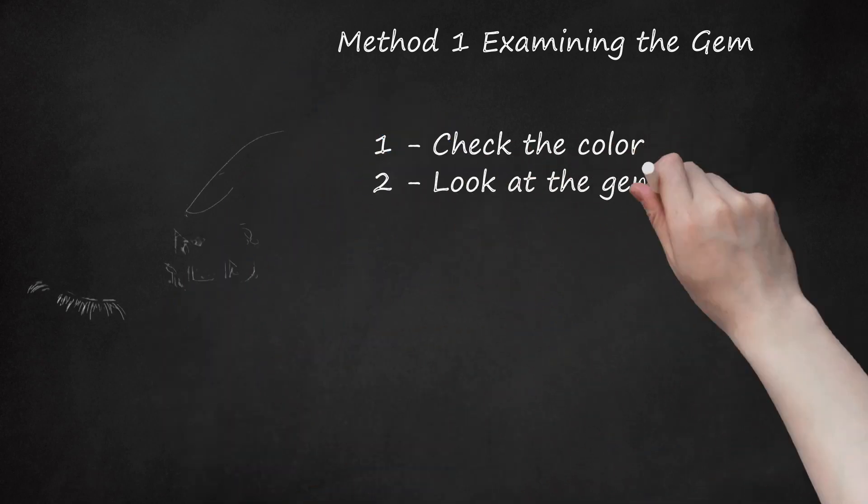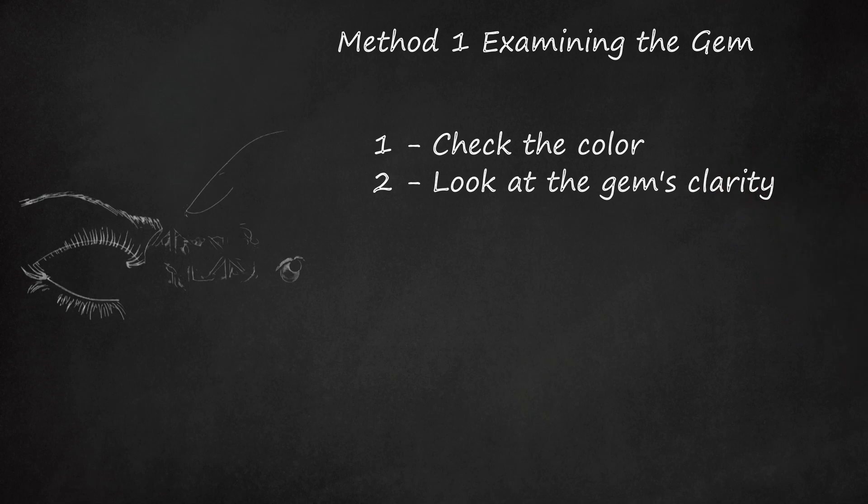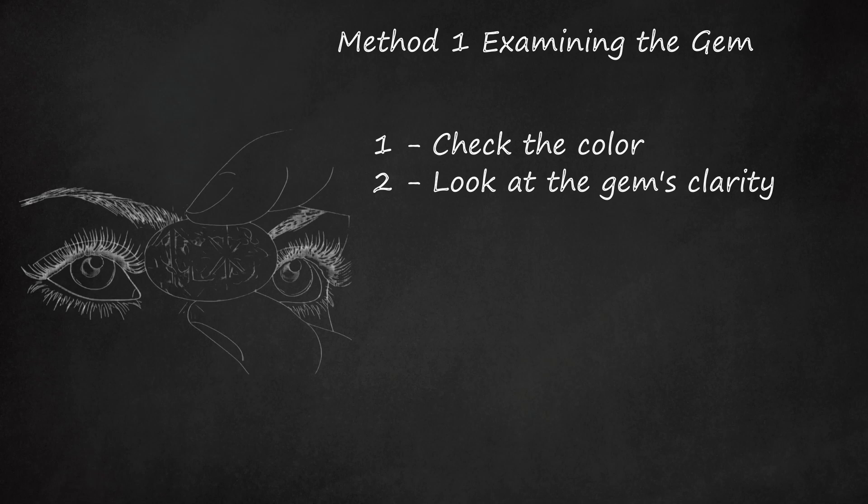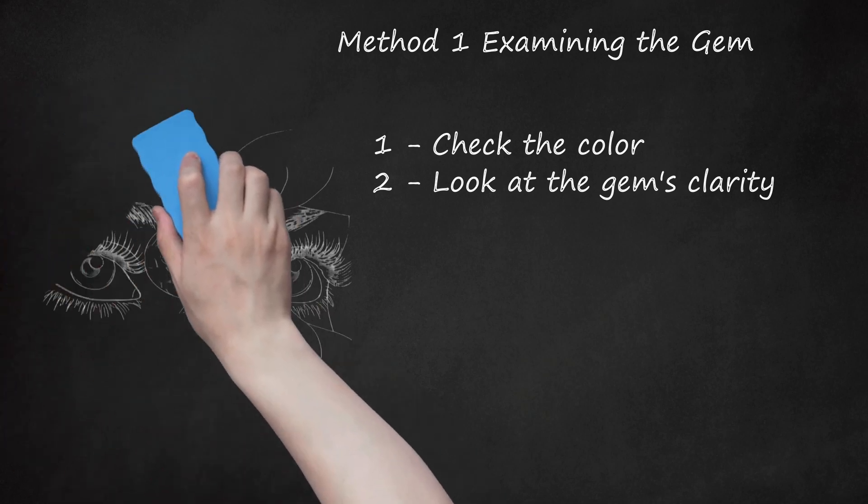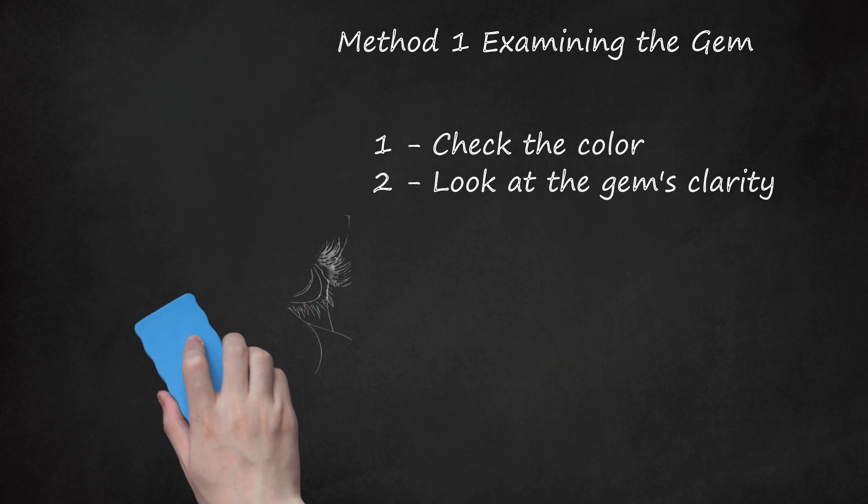2. Look at the Gem's Clarity. Clarity can also help clue you in as to whether an amethyst gem is authentic. Amethyst is generally eye-clean. This is a term that means the product is free of inclusions, which are materials trapped in a gem during its formation, visible with the naked eye. An authentic amethyst is likely to be mostly clear in appearance. Bubbles and discolorations are unlikely.